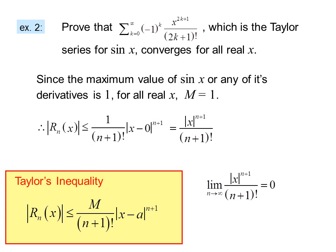If we take the limit as n goes to infinity of this expression, we get 0. Because as n approaches infinity, eventually we're multiplying the denominator by a larger number than the x we are multiplying in the numerator. So the series converges.